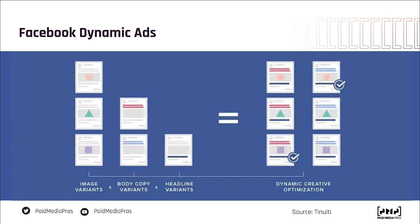What Facebook allows you to do is upload all of those assets in a single ad in the platform. What comes out are those six creatives you see on the side — two with the circle image in red and blue body copy, two with the triangle image in red and blue, and two with the square image in red and blue. They all have the same black headline variant because we only added one headline.